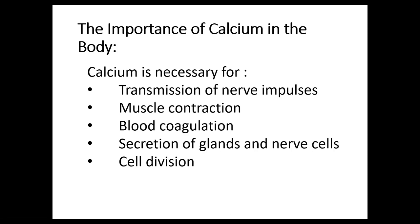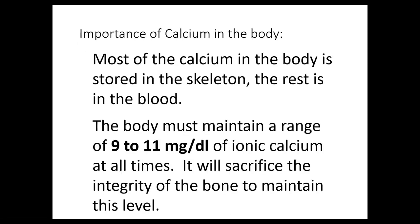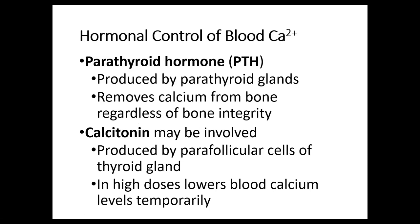Number seventeen: what are the hormones associated with blood calcium levels? The first is PTH (parathyroid hormone), produced by the parathyroid glands; it removes calcium from bones regardless of bone integrity. The second is calcitonin, produced by parafollicular cells of the thyroid; in high doses it lowers blood calcium levels temporarily. These two hormones are associated with blood calcium level.